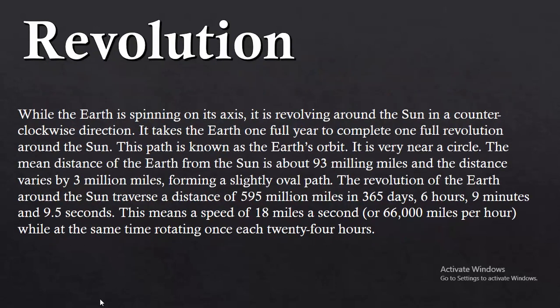Moving on to our second type of movement, which is revolution. Rotation takes 24 hours — after a day and night, one rotation is completed. But the revolution is completed in a solar year. In a solar year there are 365 days. This means that after 365 rotations, one revolution is completed.